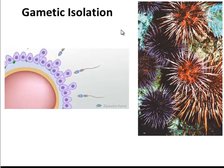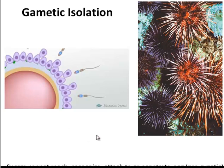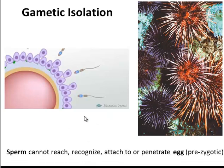Gametic isolation occurs in the case of these sea urchins. The red and the purple are two different species, and the reason is because the sperm from one of the sea urchin species is unable to penetrate the egg of the other species. In order for fertilization to occur, the sperm has to be able to sense the egg through chemical signals, then bind to proteins on the egg, and then penetrate the outer layer so that its chromosomes can get inside the egg. In the case of gametic isolation, that just doesn't happen.